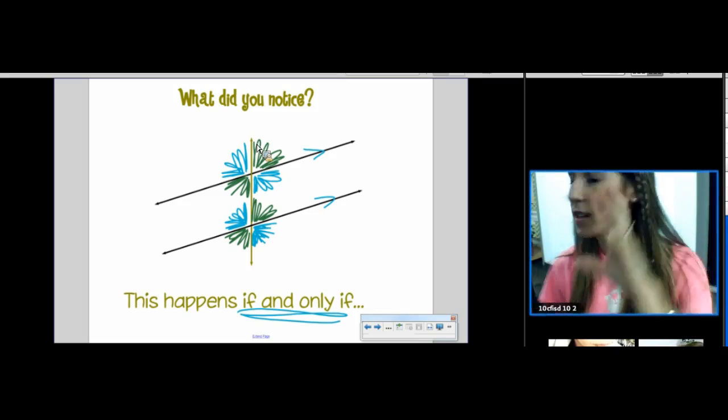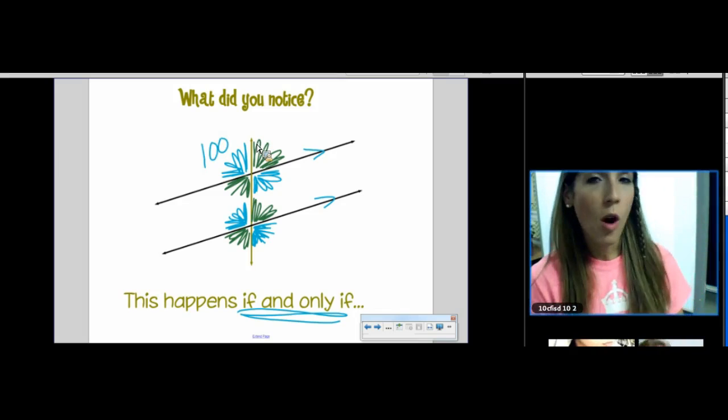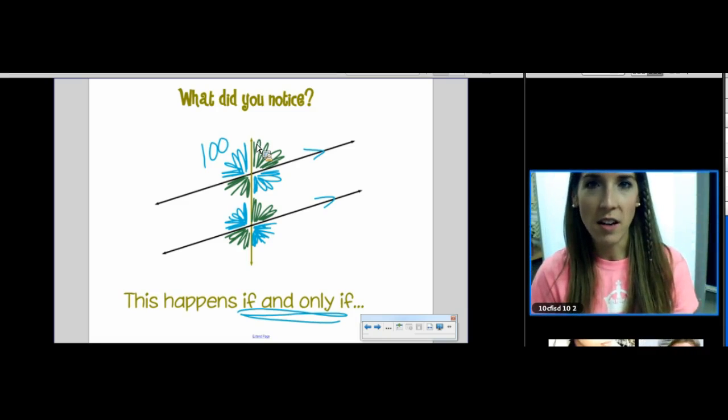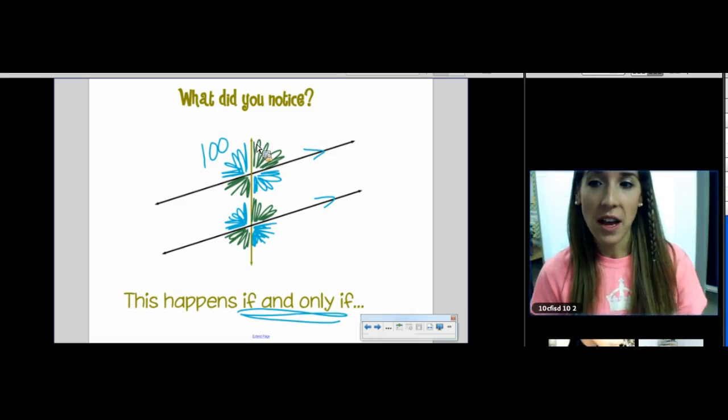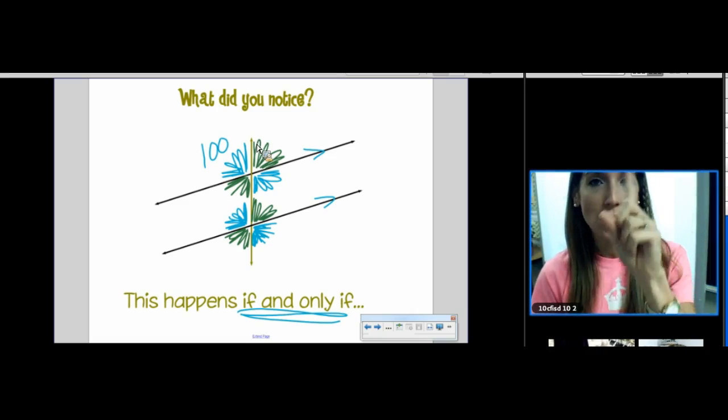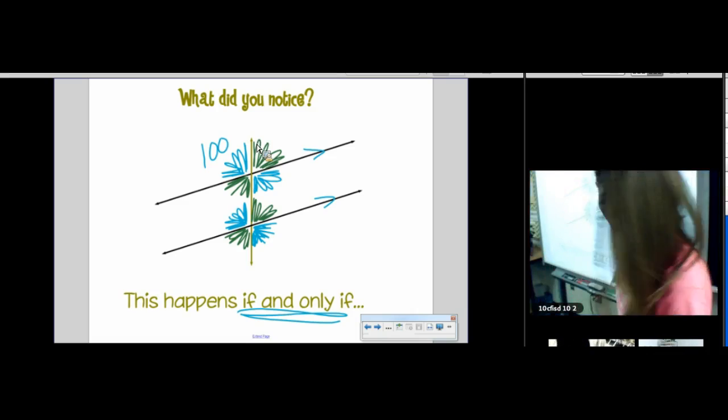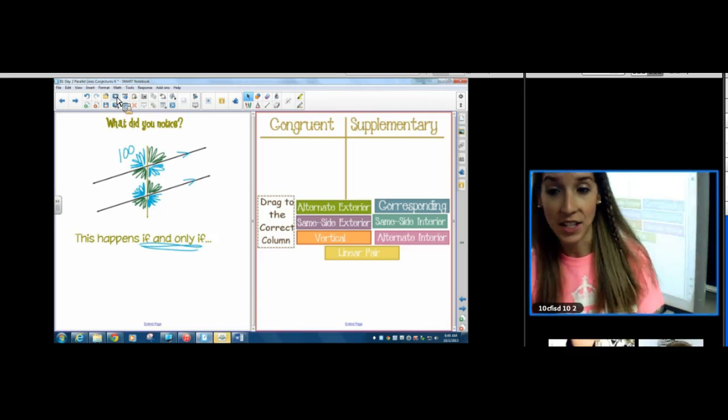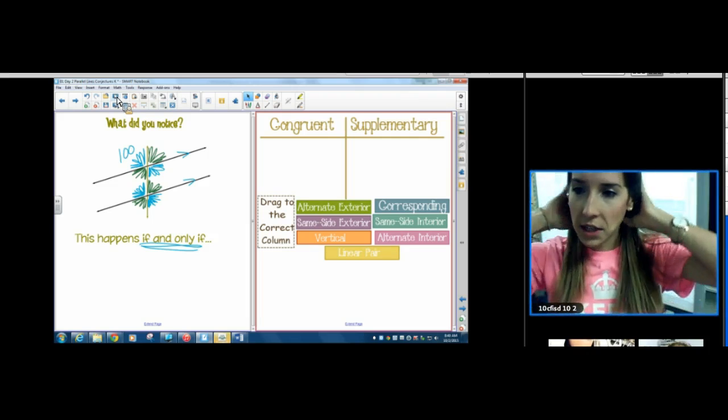So we realized that half of the angles were congruent to each other and the other half of the angles were the supplement to the original angles. So we realized that if and only if these lines are parallel, well, cool things happen. Notice that if I know one angle, like if I know that this is 100, I know all the angles because all the blue ones are 100 and all the green ones are the supplement of 100. They're 80.